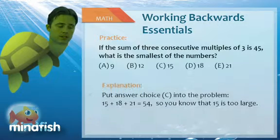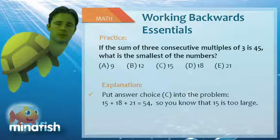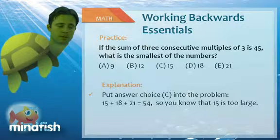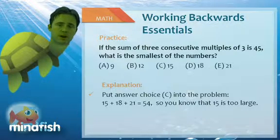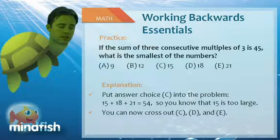So we're going to try choice C, 15. If we do, and we add 15 plus 18 plus 21, we get 54. Now we wanted the sum to be 45, so we know that C is too large. So we can cross out C, D, and E right off the bat.